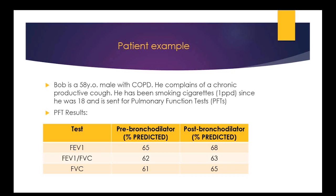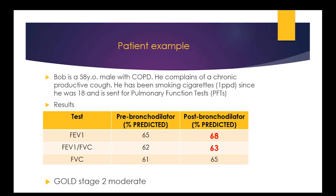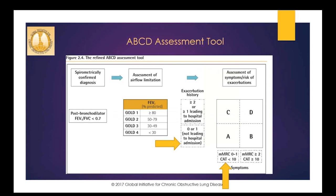Consider Bob, a 58-year-old male with COPD complaining of a chronic productive cough. He's been smoking a pack a day since he was 18 and is sent for pulmonary function tests. Bob does have COPD based on his FEV1 to FVC ratio remaining less than 70 after bronchodilators, and he would be assessed as GOLD stage 2 moderate because his post-bronchodilator FEV1 is between 50% and 80% predicted. Bob had one exacerbation in the past year treated as an outpatient, and his CAT score is 9, placing him in risk category A.